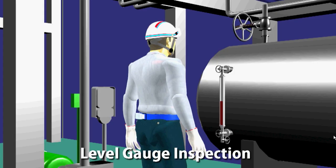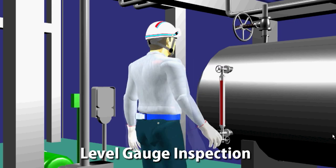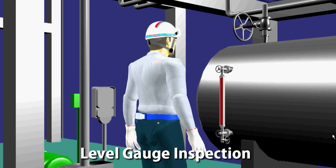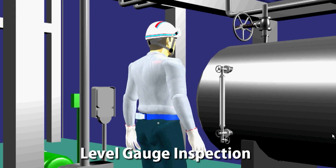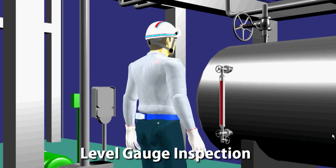We are now going to inspect the functions with level gauge at the reflux drum. Avatar is now closing the valve on the gauge's vapor side and then the one on the liquid side. After those works, it extracts the liquid from the inside of the gauge and makes the reverse operations so that we can confirm if the level gauge is operational in normal mode.